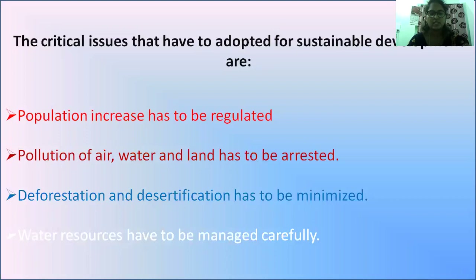Shifting from conventional energy sources to non-conventional energy resources like wind and solar energy is essential. Deforestation and desertification have to be minimized. Increasing cultivation and cropping, and using overall area mainly for vegetation, helps reduce soil erosion. Plants, trees, fruits, and vegetables also contribute to good health and serve kitchen purposes, while reducing deforestation.